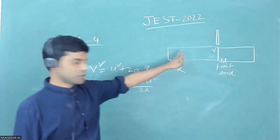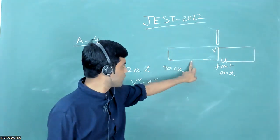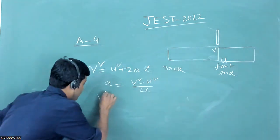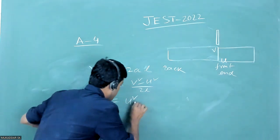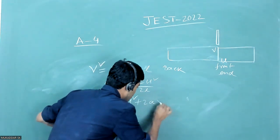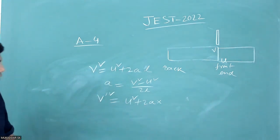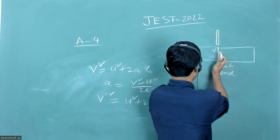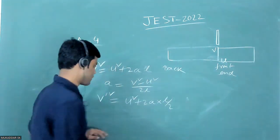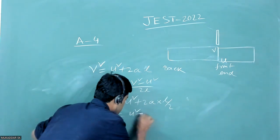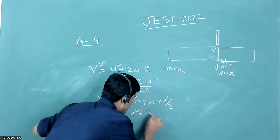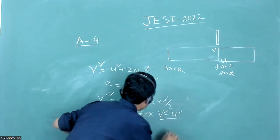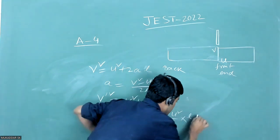Now, the speed of the middle part of the train while crossing this pole: v'² = u² + 2a × (L/2), because the middle part has traveled a distance of L/2. Substituting the acceleration, we get 2 × (v² − u²)/(2L) × (L/2).